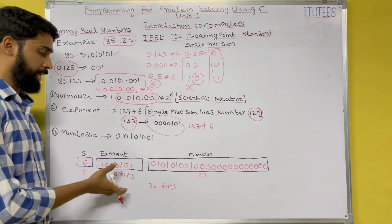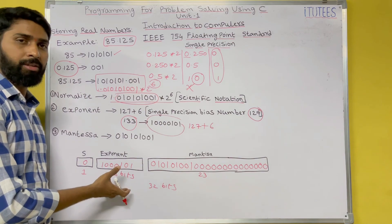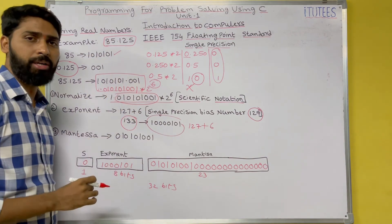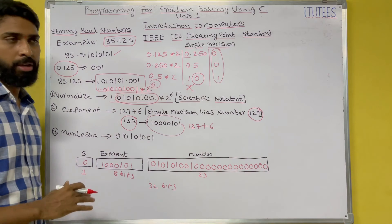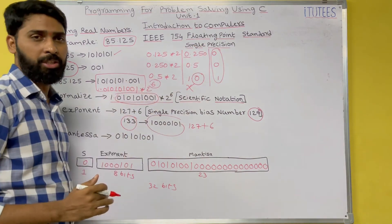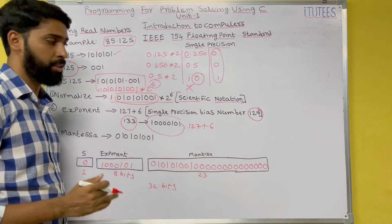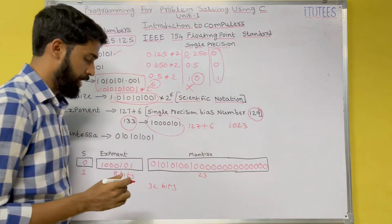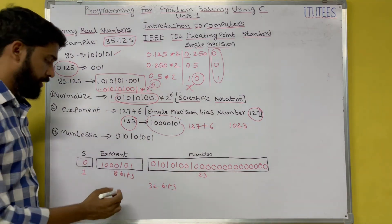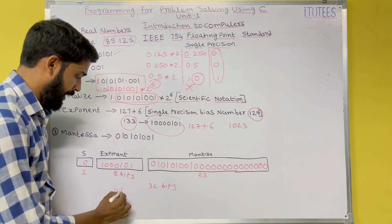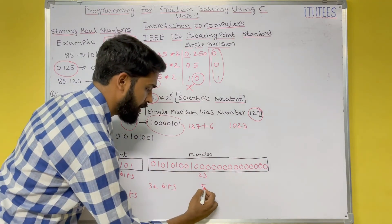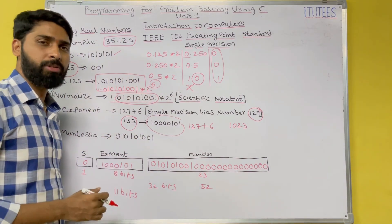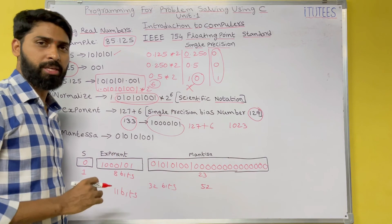This is the complete 32-bit binary representation of 85.125. For double precision, the bias is 1023, the exponent field is 11 bits, and the mantissa is 52 bits. The remaining process is the same.